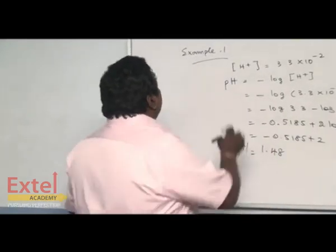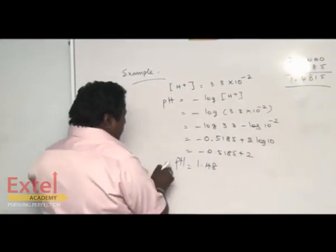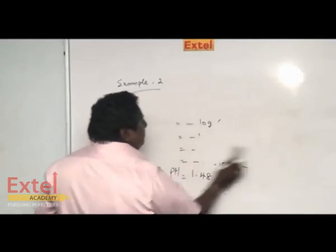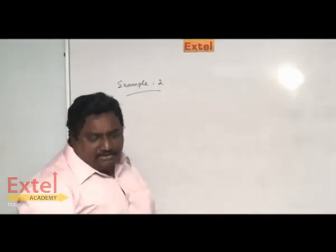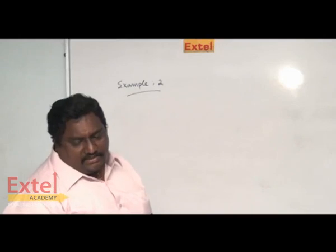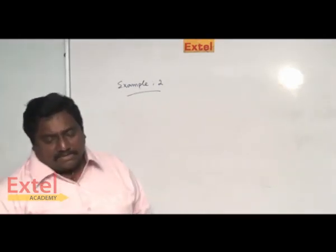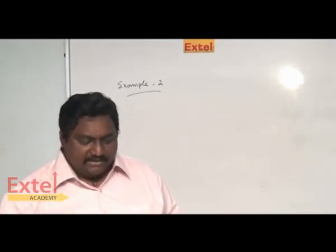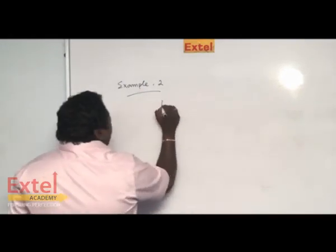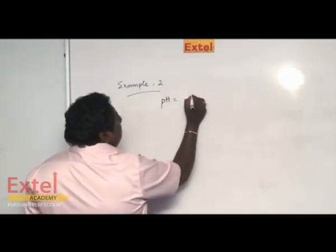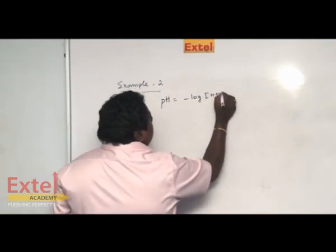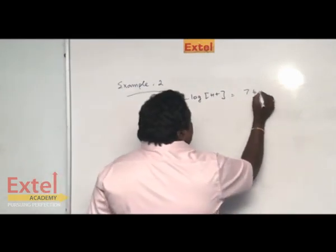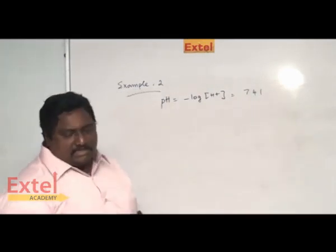Shall we go for example 2? Now example 2. In example 2, if a solution has a pH of 7.41, pH value is given and asks us to determine H⁺ concentration. You know very well that pH is nothing but minus log of H⁺ concentration and this value is 7.41.